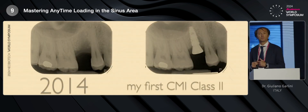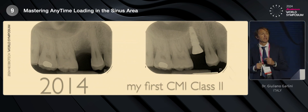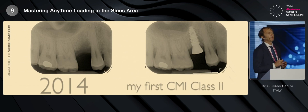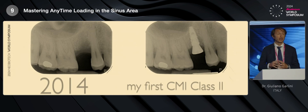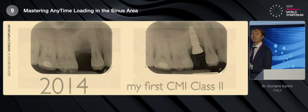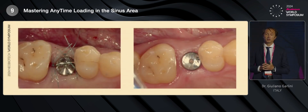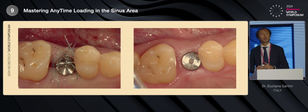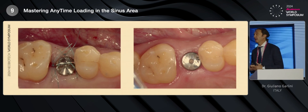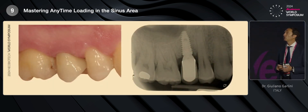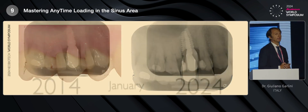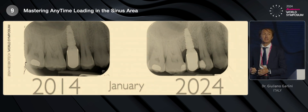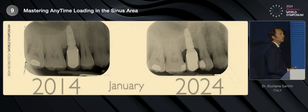In 2014, I performed my sinus class 2 CMI fixation, and I inserted this implant in the second premolar right area, and I fixed a healing screw over the implant. This was the situation on your left just after the surgery, and after three months of healing — so no immediate restoration at that time, no any time loading, but conventional loading. This was the situation just after the loading. And here, ladies and gentlemen, January 2024 — an X-ray of control — and you can see that everything is stable from a radiological point of view and also from a clinical point of view.